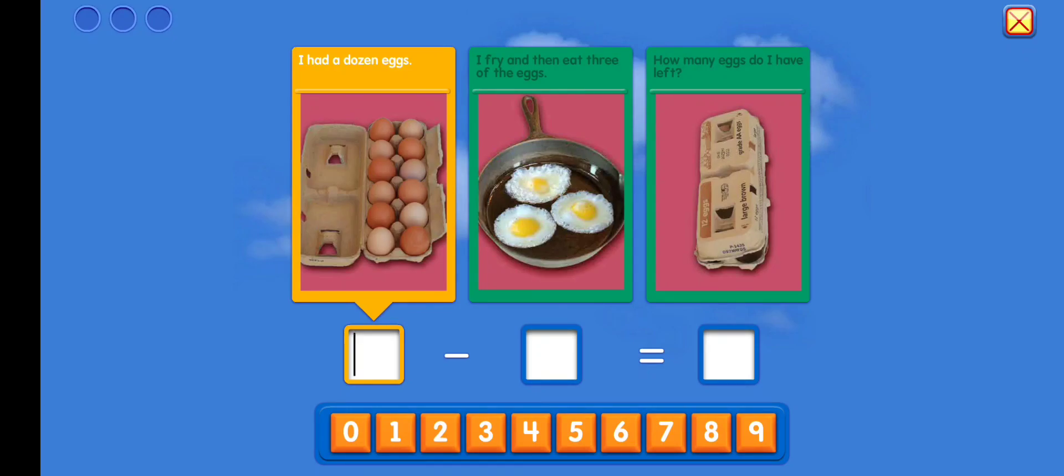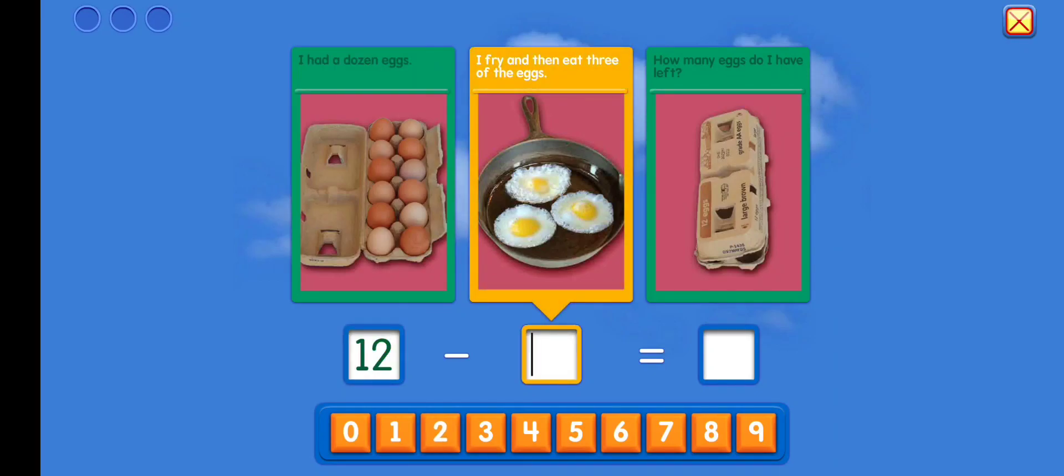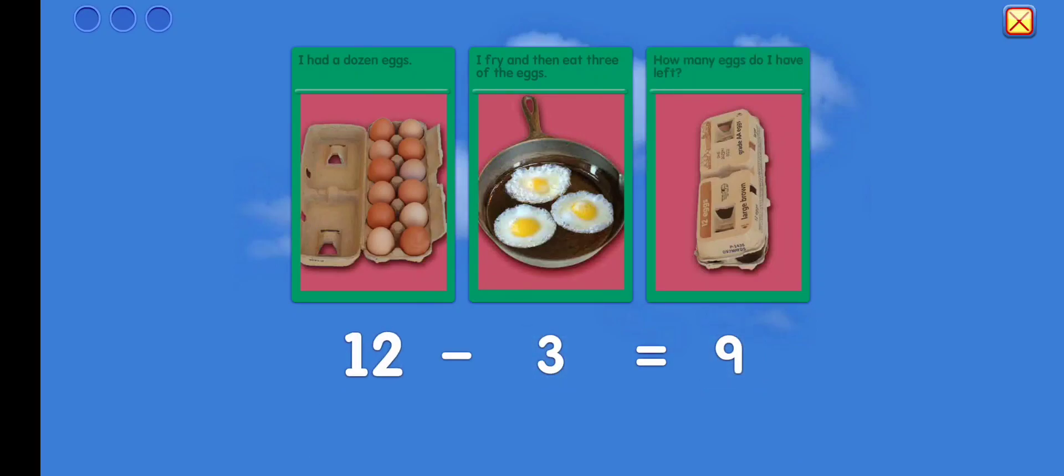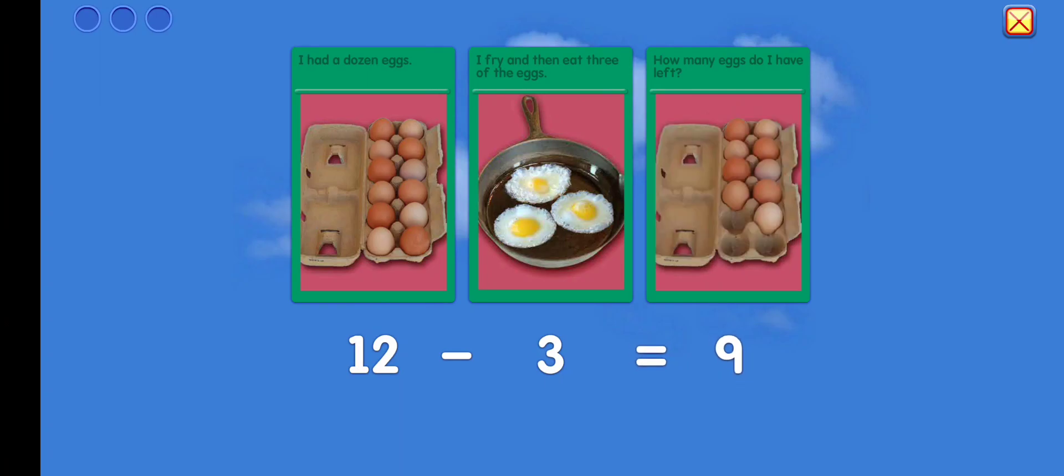I had a dozen eggs. Twelve. I fry and then eat three of the eggs. Minus three. How many eggs do I have left? Equals nine. Twelve minus three equals nine. Awesome!